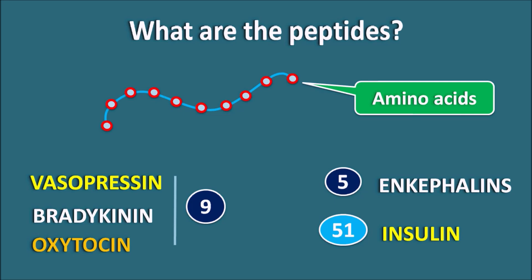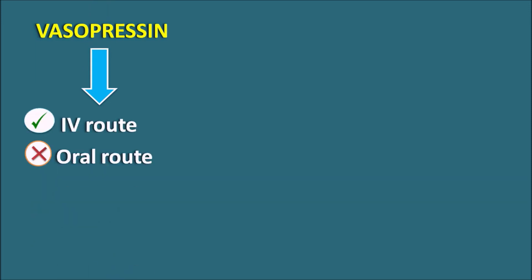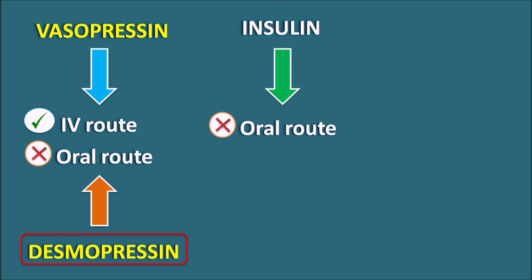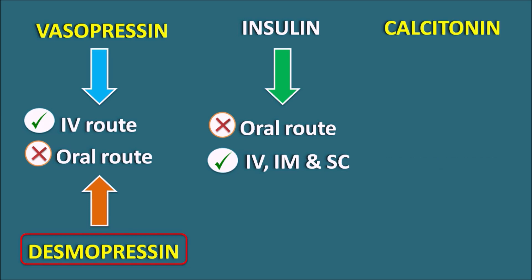Now the question is: can we use these peptides as drugs? We can use peptides as drugs, but they have a few limitations when administered in our physiological system. For example, vasopressin is an antidiuretic hormone that can be given by IV route but is not suitable by oral route. On the other hand, the related drug desmopressin can be given by both IV and oral routes. Similarly, insulin is not suitable by oral route and is given by intravenous, intramuscular, or subcutaneous routes. Calcitonin is a peptide drug used in the treatment of osteoporosis and is preferred as a nasal spray. So many peptide drugs are not suitable by the oral route.